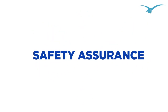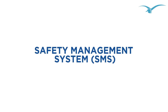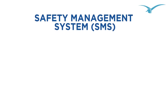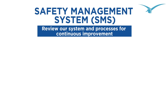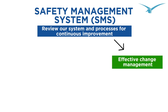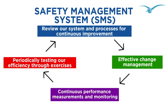Third, Safety Assurance. As a result of our unending thirst for improvement, we review our safety system and processes for continuous improvement, implement effective change in management, move to continuous performance measurement and monitoring, and periodically test our efficiency through exercises.